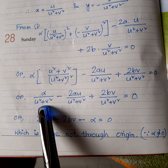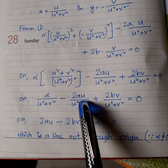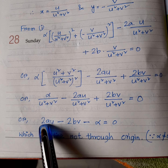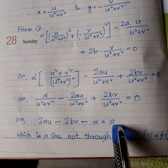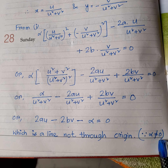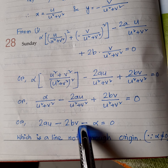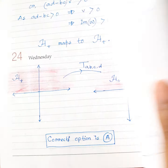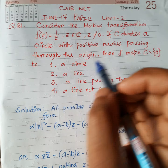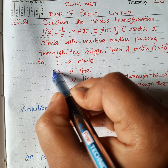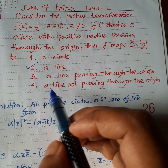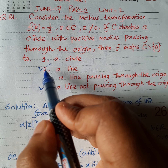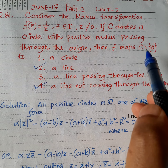After cancelling the factor (u² + v²), we get: 2au − 2bv − α = 0. Since α ≠ 0, this represents a line not through the origin. So under the map f(z) = 1/z, the image of C minus {0} is a line not passing through the origin. Therefore the correct options are options 2 and 4.